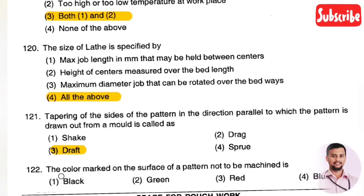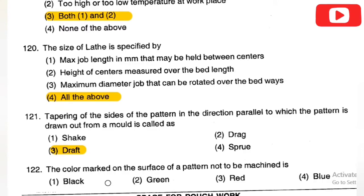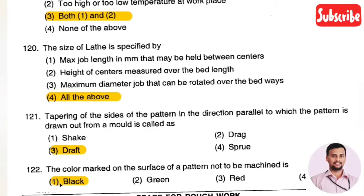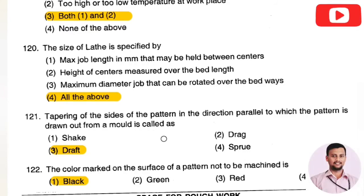The next question: the color marked on the surface of a pattern that is not to be machined is — Option 1: black, Option 2: green, Option 3: red, Option 4: blue. The right answer is black. If black color is marked on any surface, that pattern should not be machined.